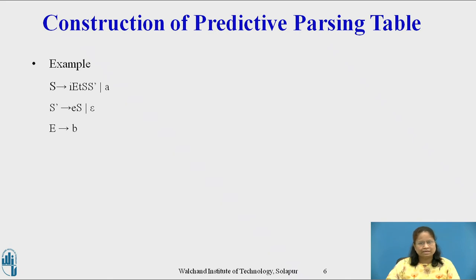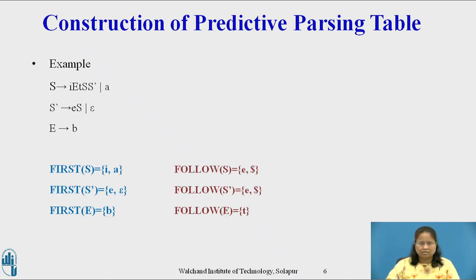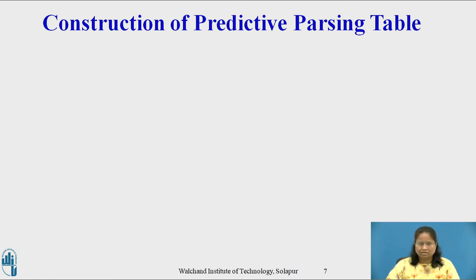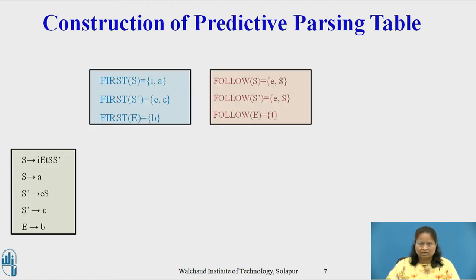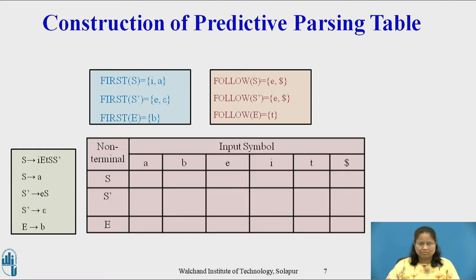Consider the second grammar with the productions given here on the slide. First and Follow sets for this grammar are given. Now consider the construction of the predictive parsing table for this grammar. The parsing table structure for this grammar — now consider how to fill entries in this table.